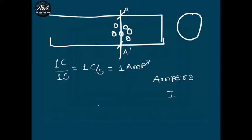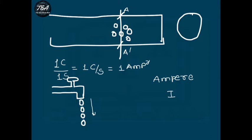To understand current, consider the example of tap water. The amount of water flowing through a tap depends on the rate at which water particles come out — the higher the rate, the more the water flow. Similarly, the higher the rate at which electrical charge passes through the reference point, the higher the current. If 5 coulombs of charge pass through the reference point in one second, the current is 5 amperes.